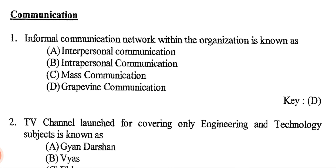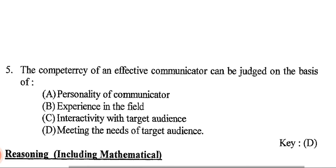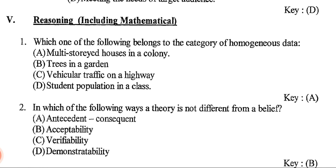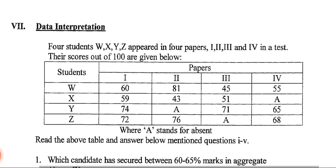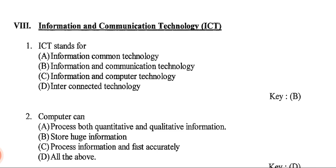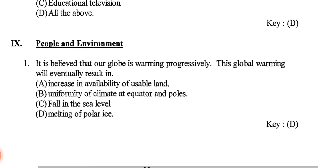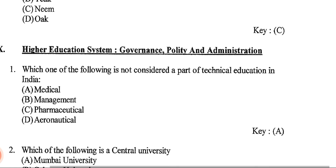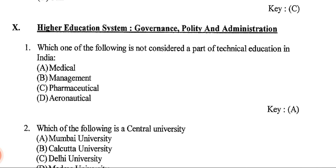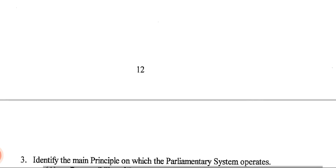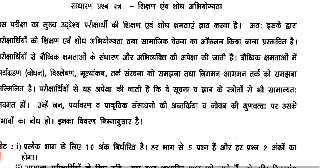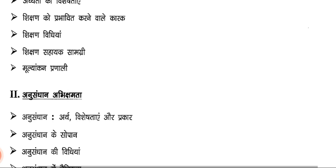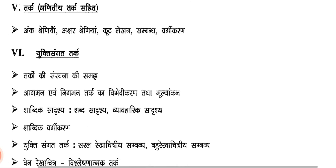From Reasoning, this kind of thing will come. From Logical Reasoning, check it out. From Data Interpretation, this kind of thing will come. From Information and Communication Technology, take a look. From People and Environment, this kind of thing. From Higher Education System, questions like 'Which of the following is a central university?' will come. You have to do thorough research. Don't think that because there's no negative marking you can just rely on luck — that approach will not get you qualified. Thank you so much for watching this video, bye.